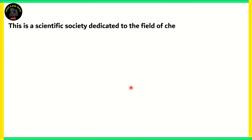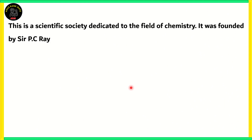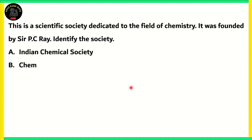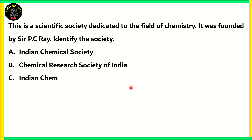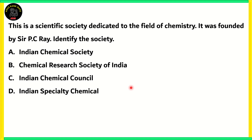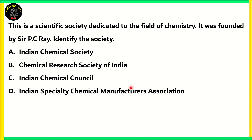Next question: This is a scientific society dedicated to the field of chemistry. It was founded by Sir P.C. Ray. Identify the society. A) Indian Chemical Society, B) Chemical Research Society of India, C) Indian Chemical Council, or D) Indian Specialty Chemical Manufacturers Association.